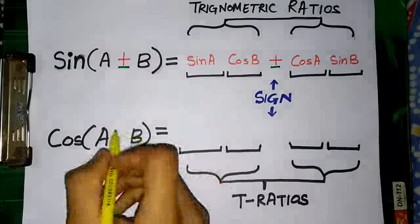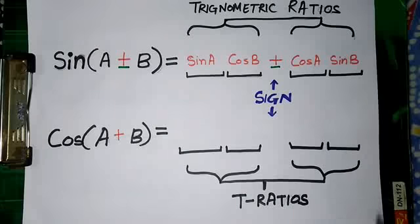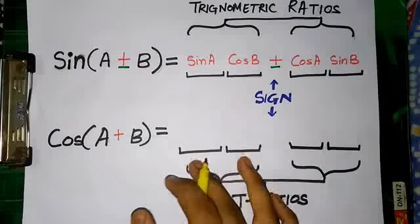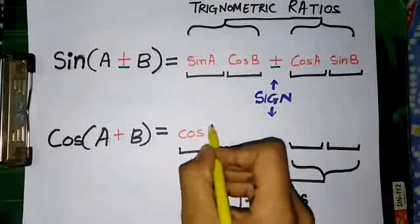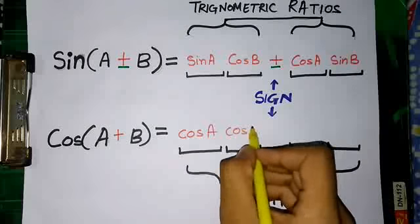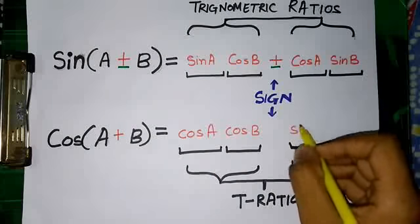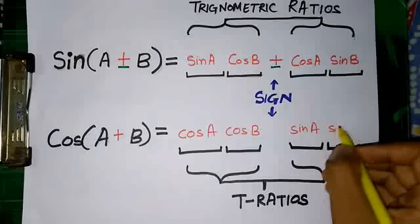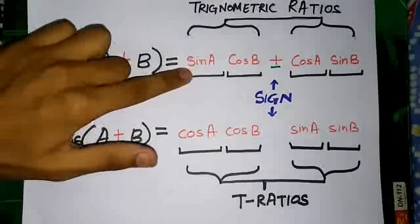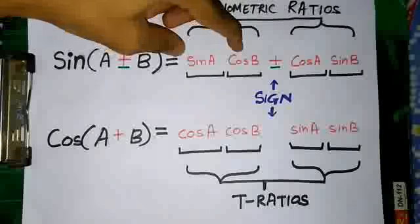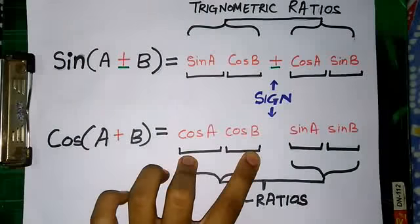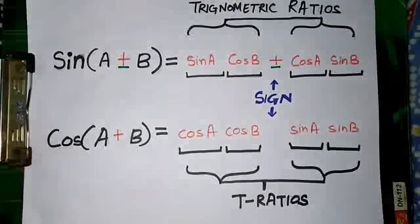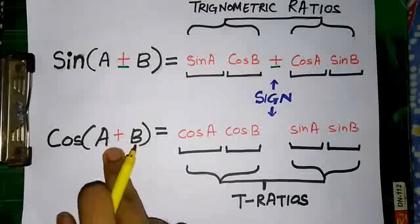Now let's talk about cos(A+B). We know that cos is bad, so what is cos going to do? It's going to take the whole first part — cos will take the first position as well as the second position — and will give the second part to sine. Whereas in the formula of sine we saw that sine maintains equality in both parts, cos takes the whole first part.